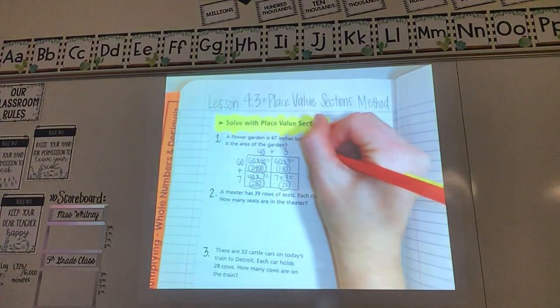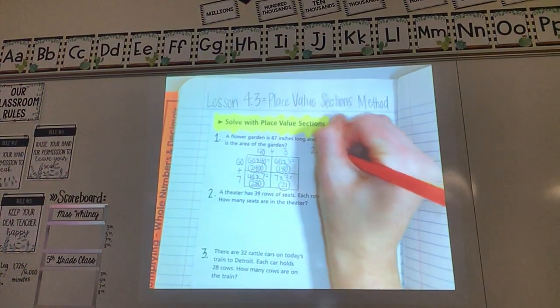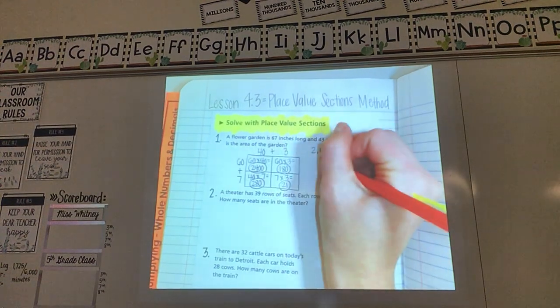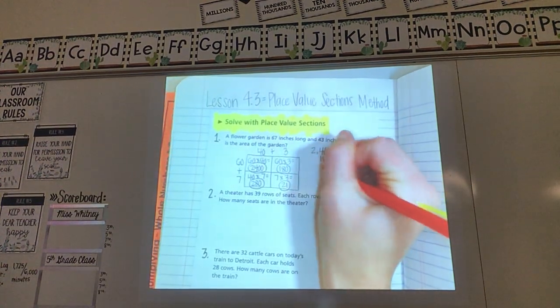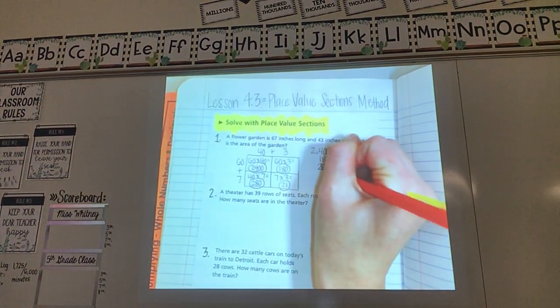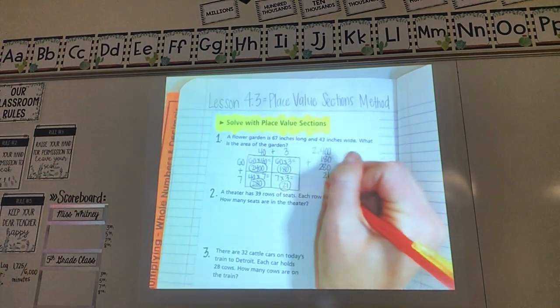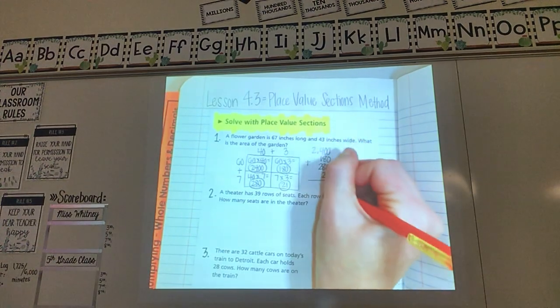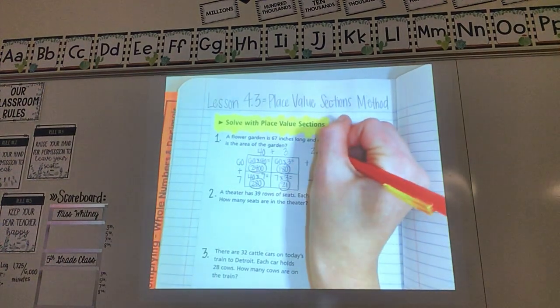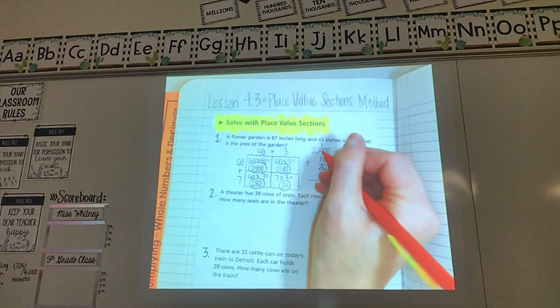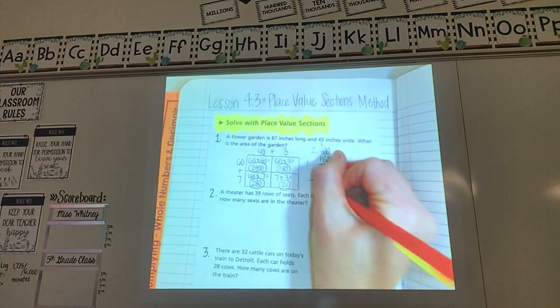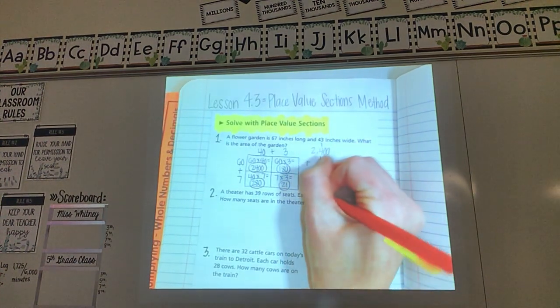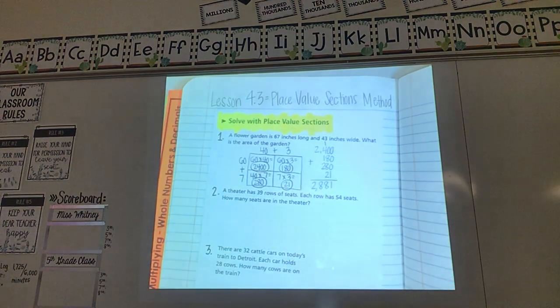I add them up. Remember we stack all of our numbers up and we add them together. So 2,400, 180, 280, and 21. And I'm just going to add. So that would be a 1. This would be an 18. So carry my 1. This would be 4, 5, 6, 7, 8. And then just a 2. So 2,881.